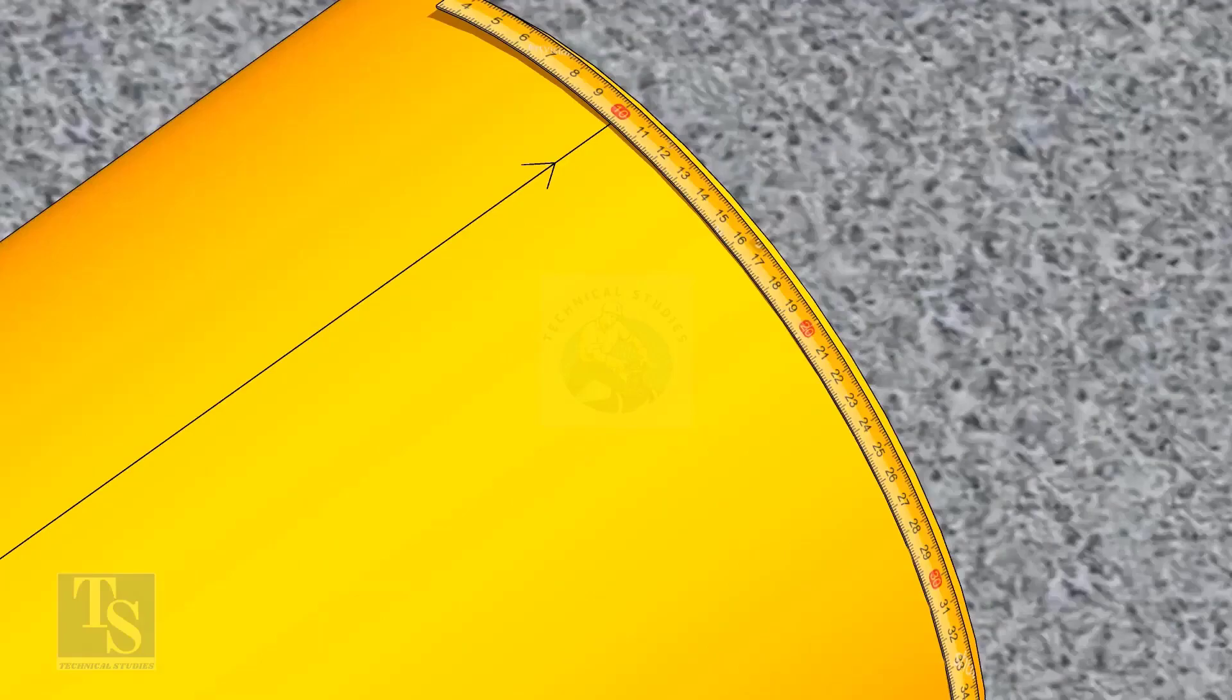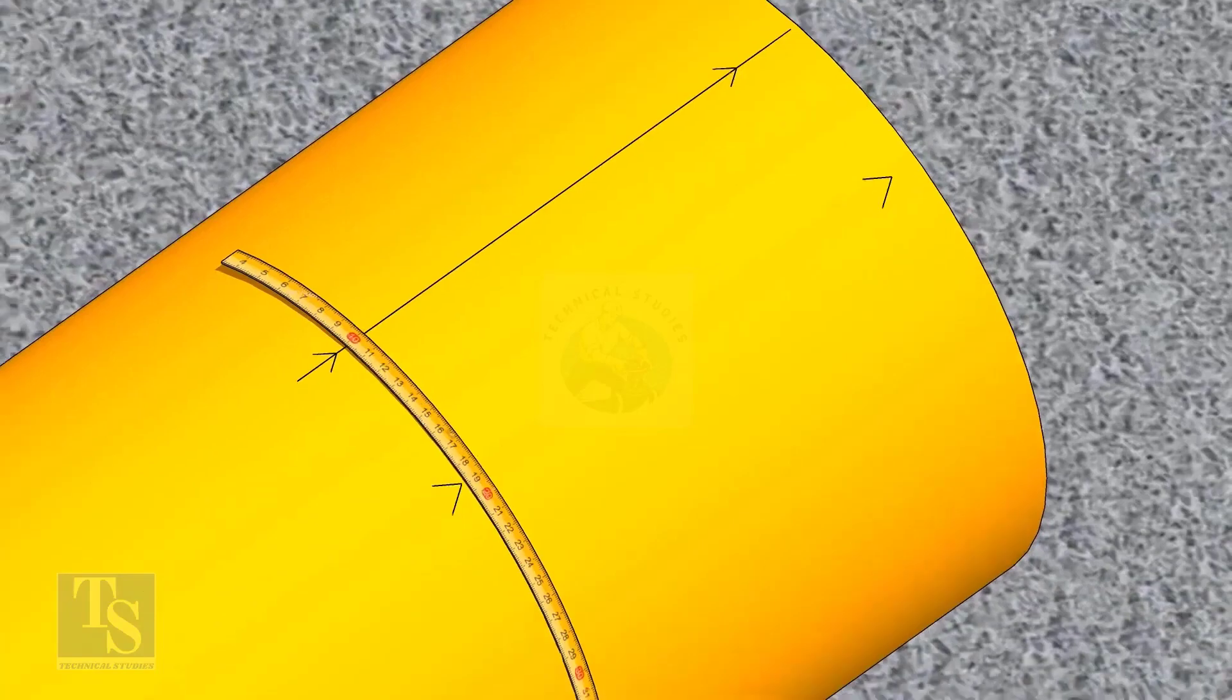Since we are rotating the flange 25 degrees anticlockwise, mark 88.5mm anticlockwise on the pipe, as shown.